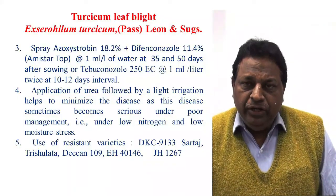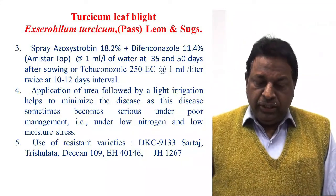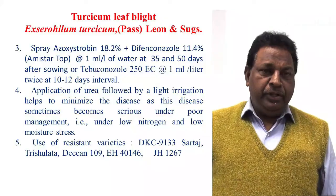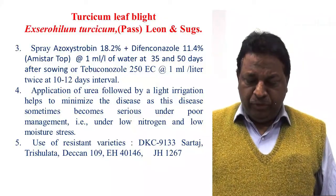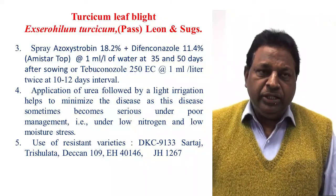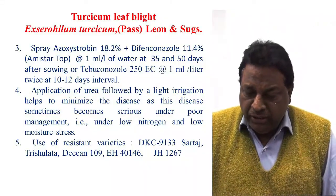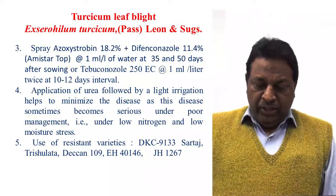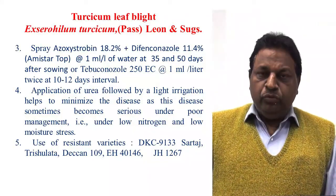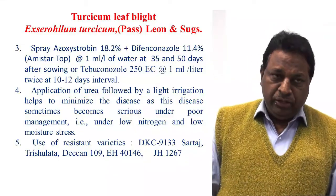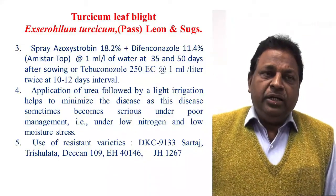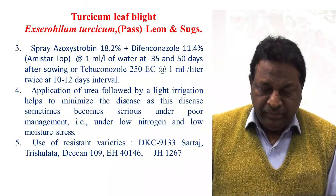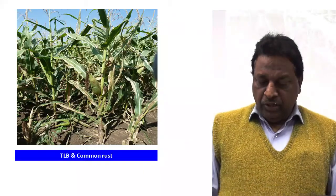Application of urea in split dose also helps in management of this disease. Some other resistant varieties reported against Turcicum leaf blight are Sartaj, Trishulata, and JH1267. These are the composite varieties which are resistant against Turcicum leaf blight.